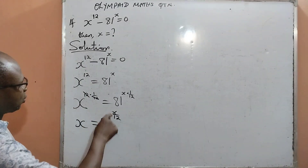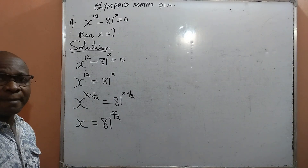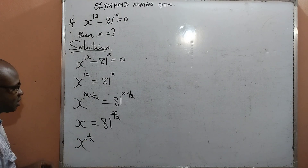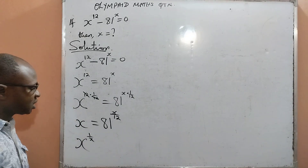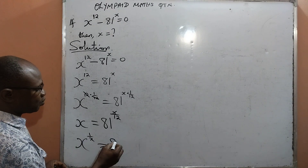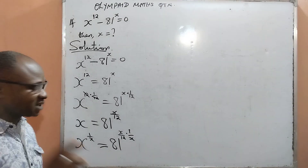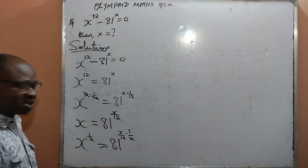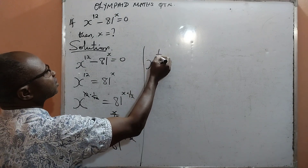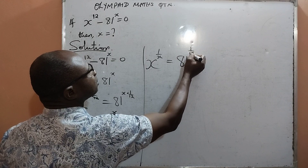Next, what I want to do is to remove this x on the right-hand side. To do that, I am going to multiply the power of both sides by 1 over x. That means I will have x raised to the power 1 over x on the left, because x is invisibly raised to the power of 1, then multiplied by 1 over x, giving me x raised to the power 1 over x, equal to 81 raised to the power x over 12, also multiplied by 1 over x. The x cancels out x, so I am left with x raised to the power 1 over x on the left, and 81 raised to the power 1 over 12 on the right.